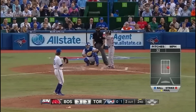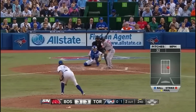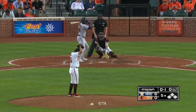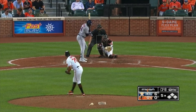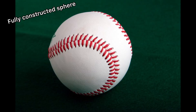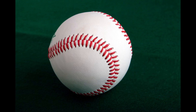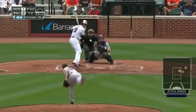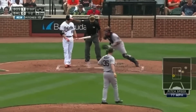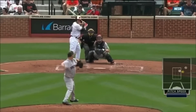Now for the fun part: how to throw knuckleballs with different balls. A baseball is a fully constructed sphere with seams. These seams are why a baseball must be thrown slightly faster than a smoother ball like a soccer ball to achieve the knuckleball effect, but also why a baseball knuckleball can have a small amount of spin and still work — the flow catches on the seams, causing the flip-flop in laminar and turbulent flow.